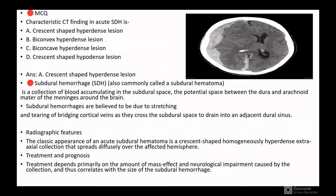Subdural hemorrhage, also known as subdural hematoma, is a collection of blood accumulating in the subdural space, the potential space between the dura and arachnoid mater of the meninges around the brain. Subdural hemorrhages are believed to be due to stretching and tearing of the bridging cortical veins as they cross the subdural space. The classic radiological appearance of acute subdural hematoma is crescent shape homogeneously hyperdense extra-axial collection that spreads diffusely over the affected hemisphere.